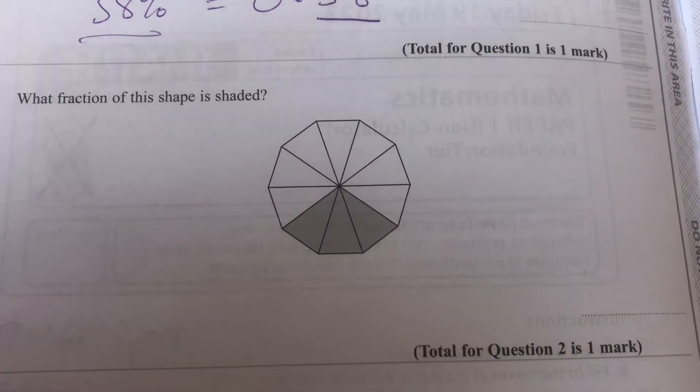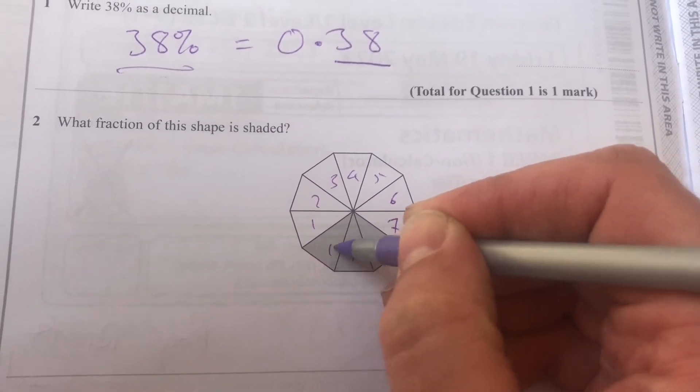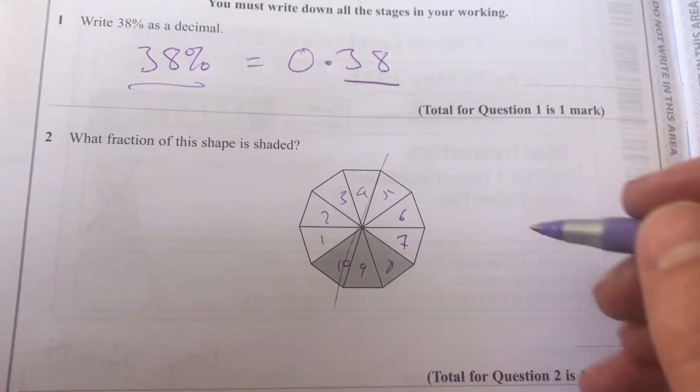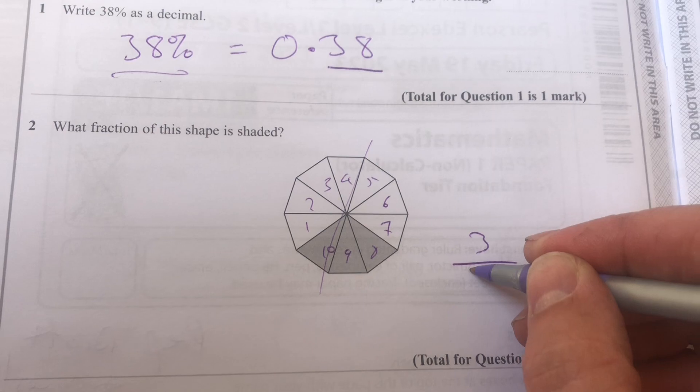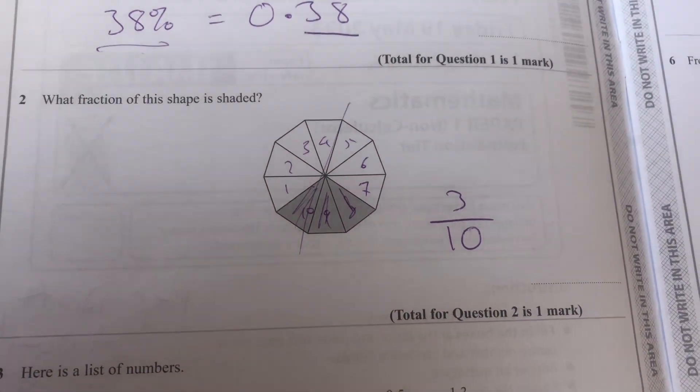What fraction of this shape is shaded? Well, counting the sections: 1, 2, 3, 4, 5, 6, 7, 8, 9, 10 total. Three are shaded - 1, 2, 3 - so the answer is 3/10.